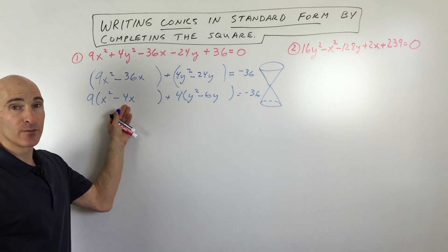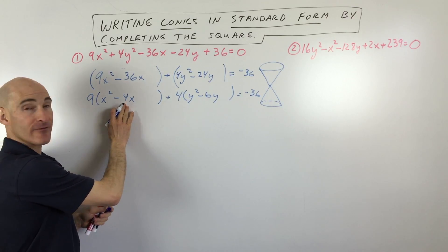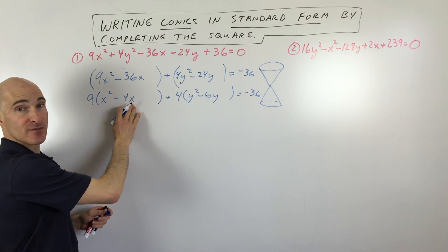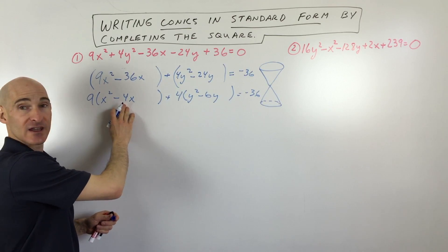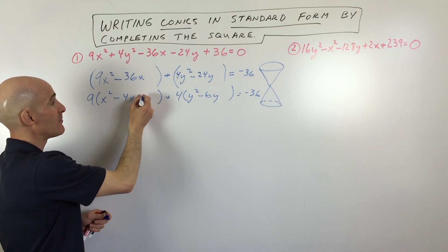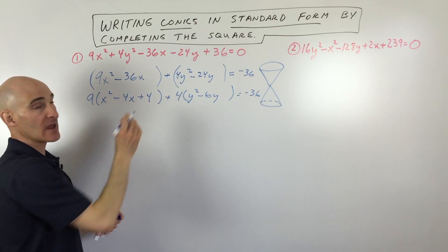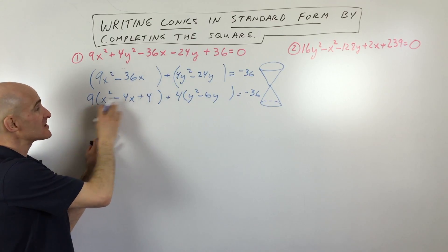Now what we're going to do is we're going to complete the square and we do that by taking half of the coefficient in front of this middle term here. So half of negative 4 is negative 2. Negative 2 squared is positive 4.